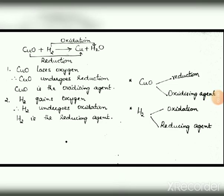Consider the reaction CuO + H₂ → Cu + H₂O. Copper oxide loses oxygen, therefore copper oxide undergoes reduction. Since reduction takes place in copper oxide, it will act as the oxidizing agent. Now hydrogen gains oxygen, therefore hydrogen undergoes oxidation. Since oxidation takes place in hydrogen, hydrogen will act as the reducing agent.